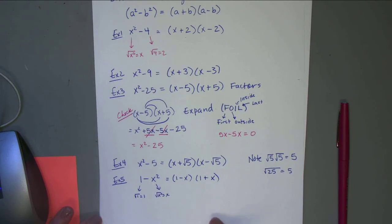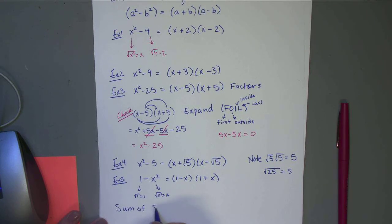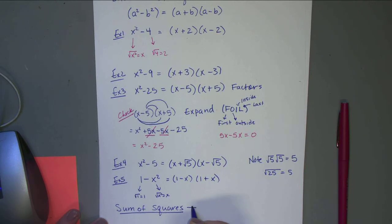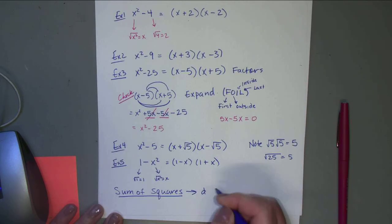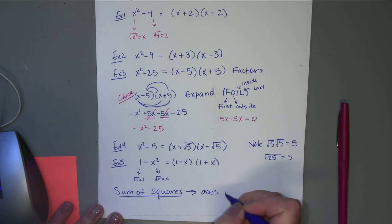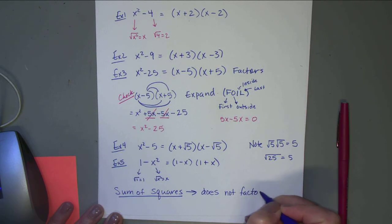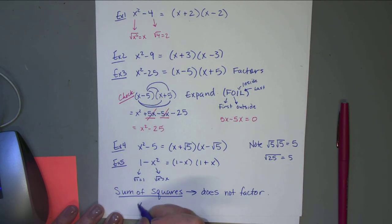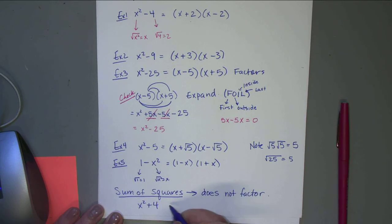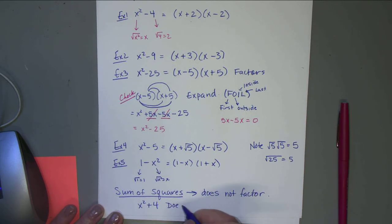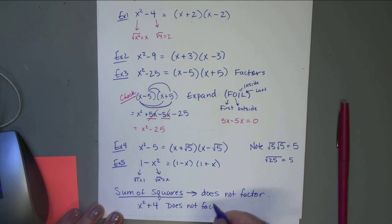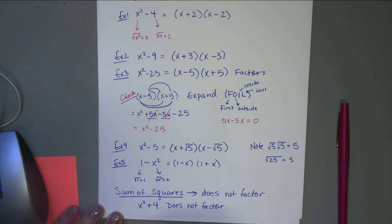We can also have the sum of squares, but the sum of squares does not factor. For example, x² + 4 — there's no way to factor this, so it does not factor. If you're asked to factor it, that's all you would say.